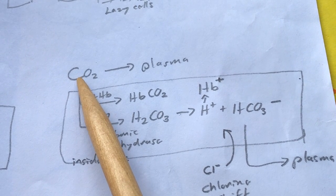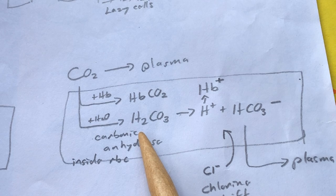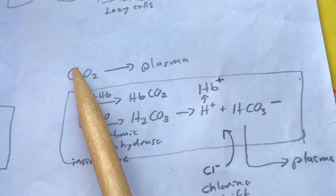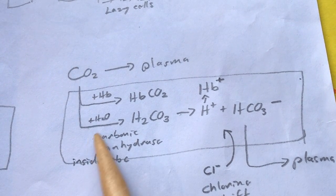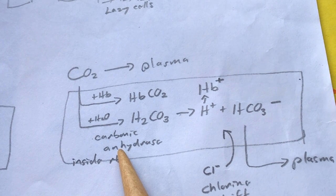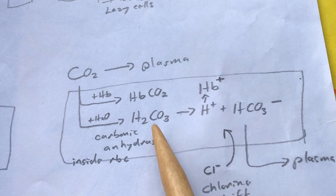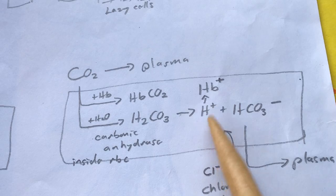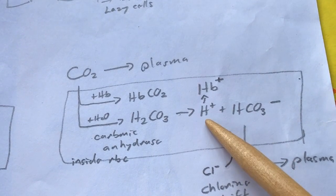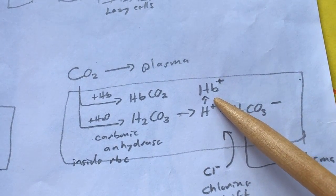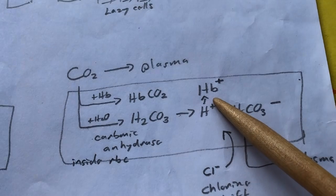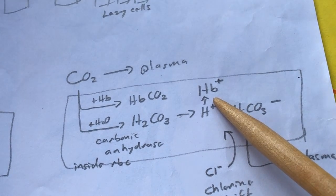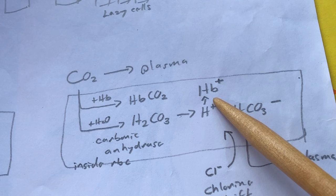Carbon dioxide can also combine with water to make carbonic acid. That can occur in the plasma but it happens faster inside the red blood cells. Carbon dioxide diffuses into the red blood cell, combines with water under the influence of the enzyme carbonic anhydrase to make carbonic acid. The carbonic acid can then dissociate into H+ and HCO3−. The H+ can combine with hemoglobin to make acid hemoglobin, which is more likely to drop oxygen.